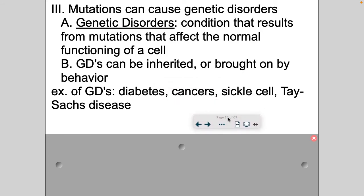Mutations can cause genetic disorders. And this tends to be when it has great effect. Genetic disorders are conditions that result from mutations, and basically the cell is just not functioning normally. These genetic disorders can be inherited. That means they're in your genes. If there's a mutation in the egg and it fuses with the sperm, you have that mutation. Or it can be brought on by behavior.